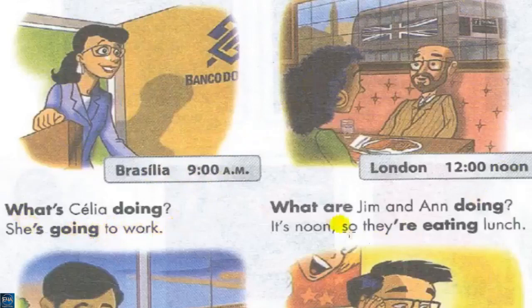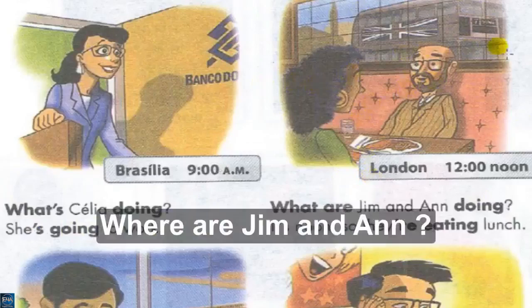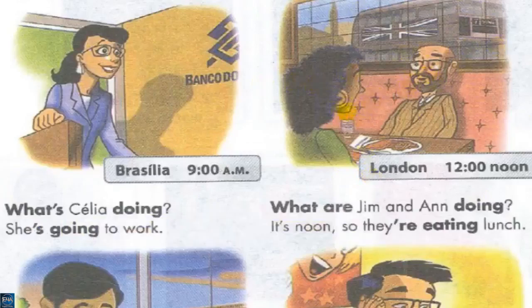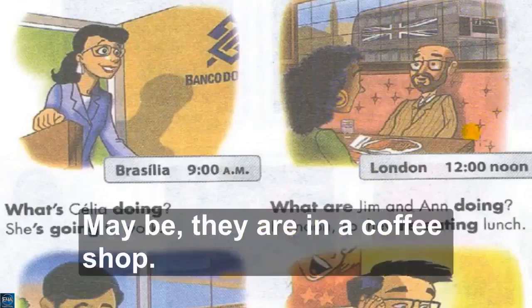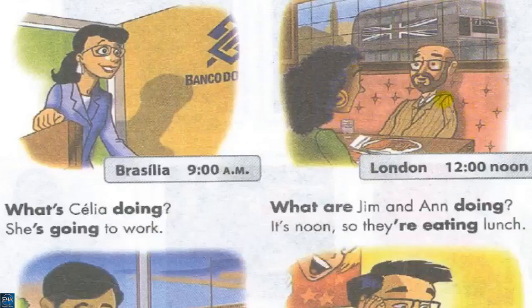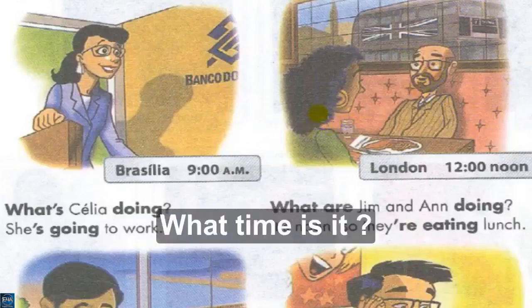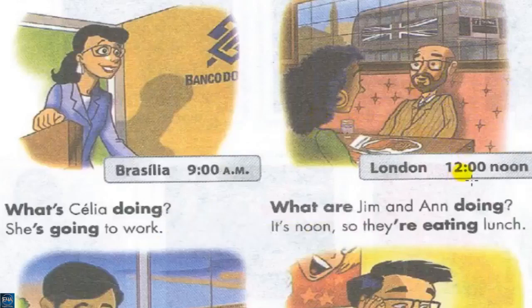Look at the picture. Jim and Ann — where are Jim and Ann? They are in a cafe, maybe a coffee shop. What are they doing? They are eating lunch. What time is it? It's 12 o'clock, it's noon.